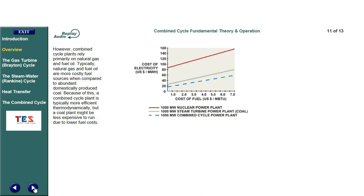However, combined cycle plants rely primarily on natural gas and fuel oil. Typically, natural gas and fuel oil are more costly fuel sources when compared to abundant domestically produced coal. Because of this, a combined cycle plant is typically more efficient thermodynamically, but a coal plant might be less expensive to run due to lower fuel costs.